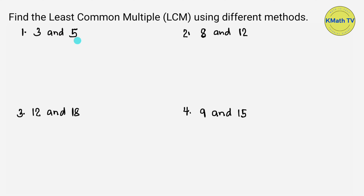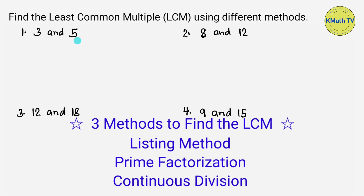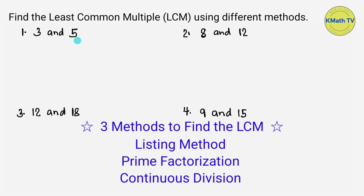To find the least common multiple or LCM of numbers, we can use any of these methods: listing method, prime factorization, and continuous division.